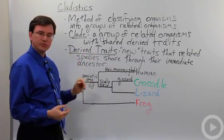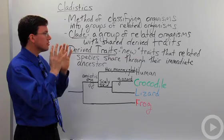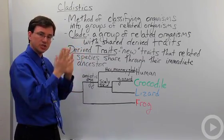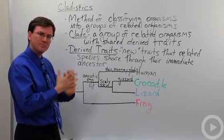Derived traits are unique or new traits that all members in a clade share with each other and their immediate ancestor.